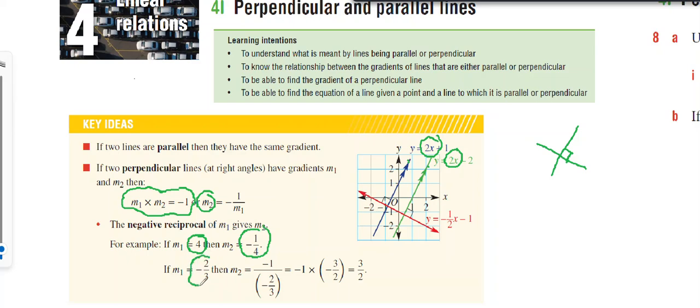If one gradient is negative 2 thirds, then the perpendicular will be 3 on 2, because negative 2 thirds times 3 on 2 gives you negative 1. The 3 cancels with the 3 and the 2 cancels with the 2 to leave negative 1.